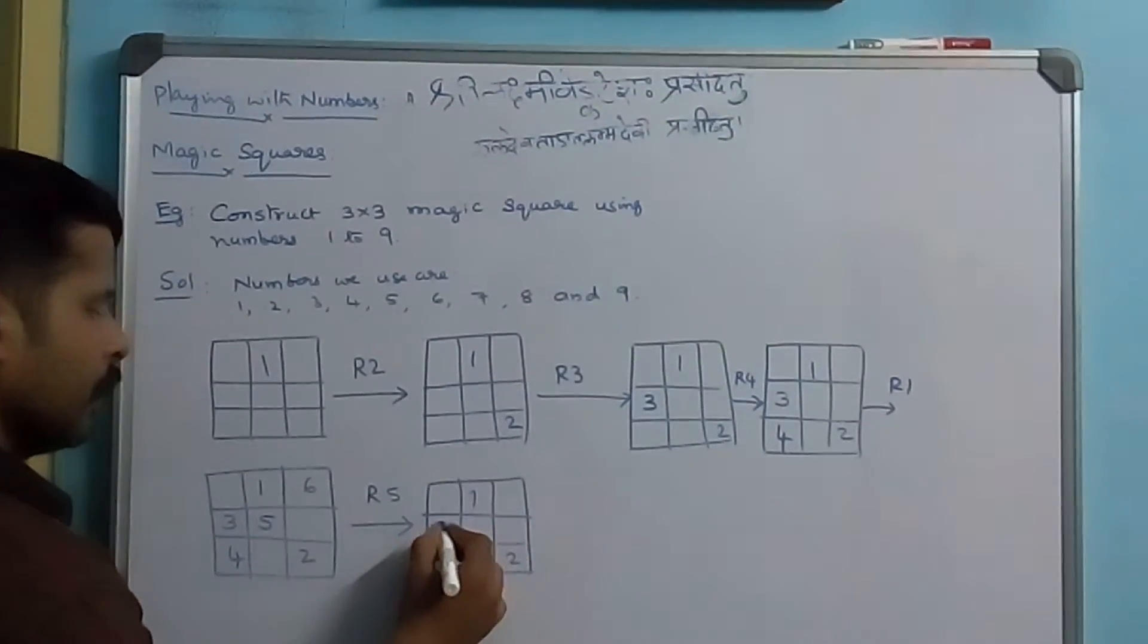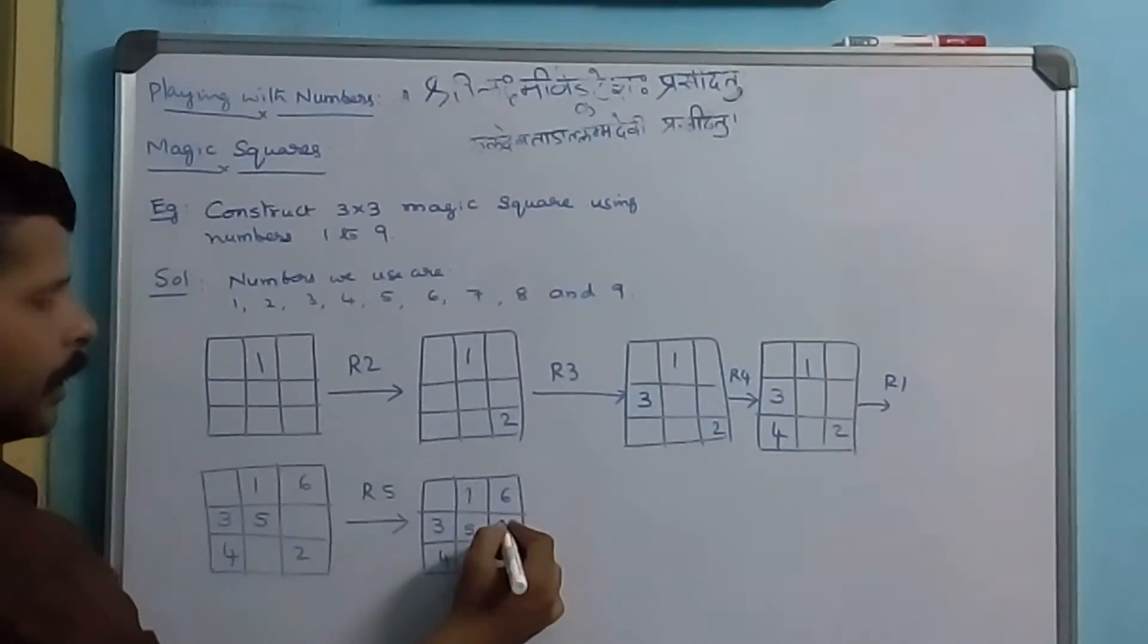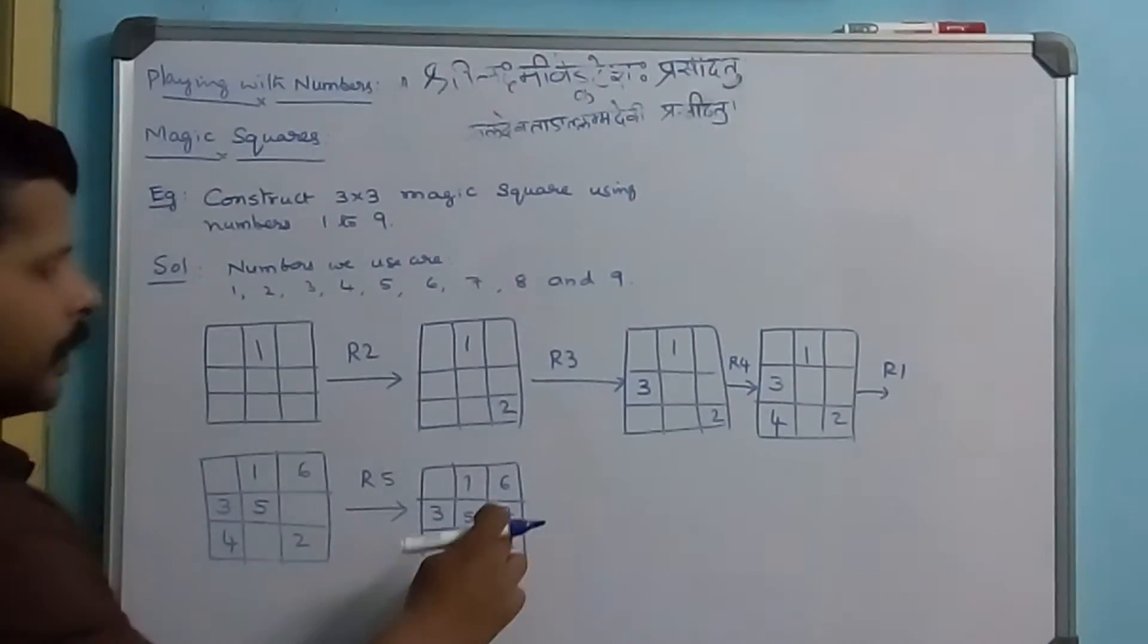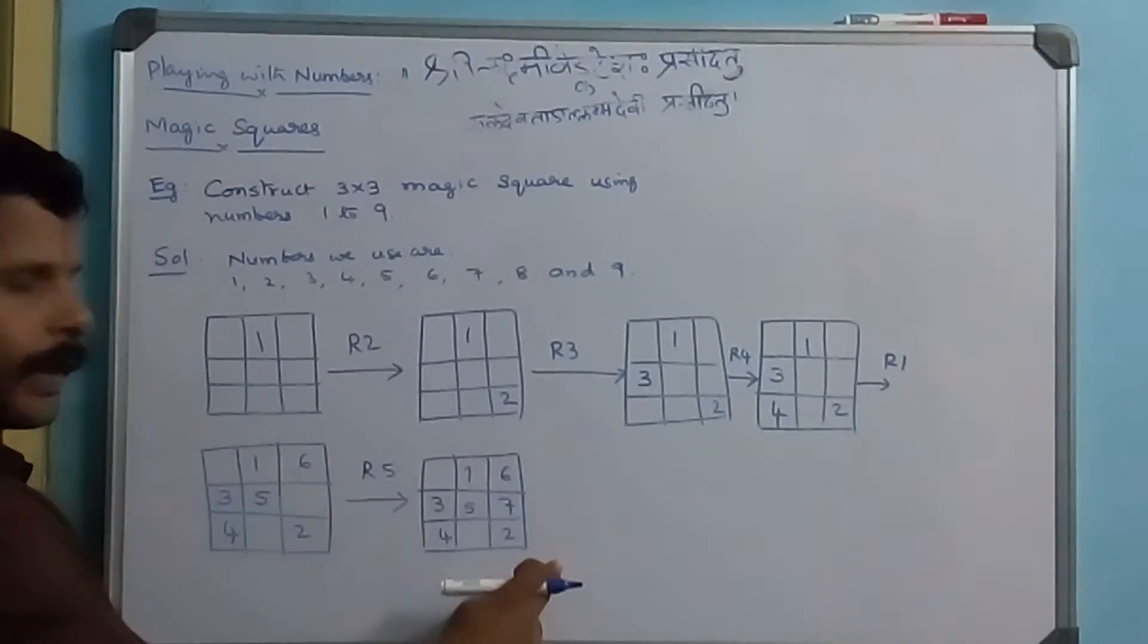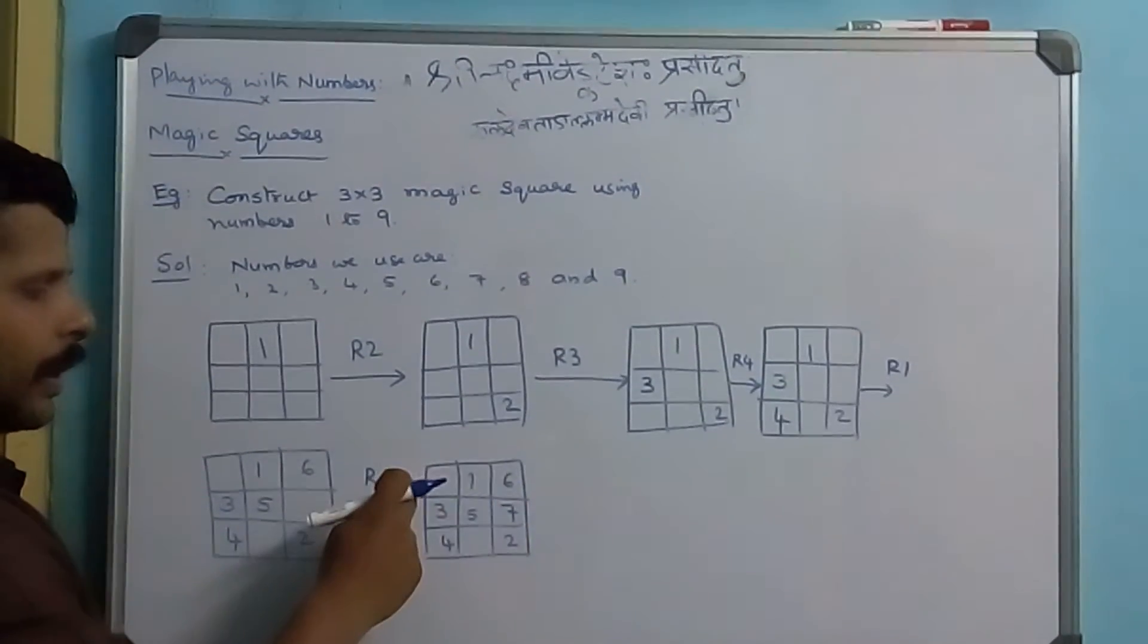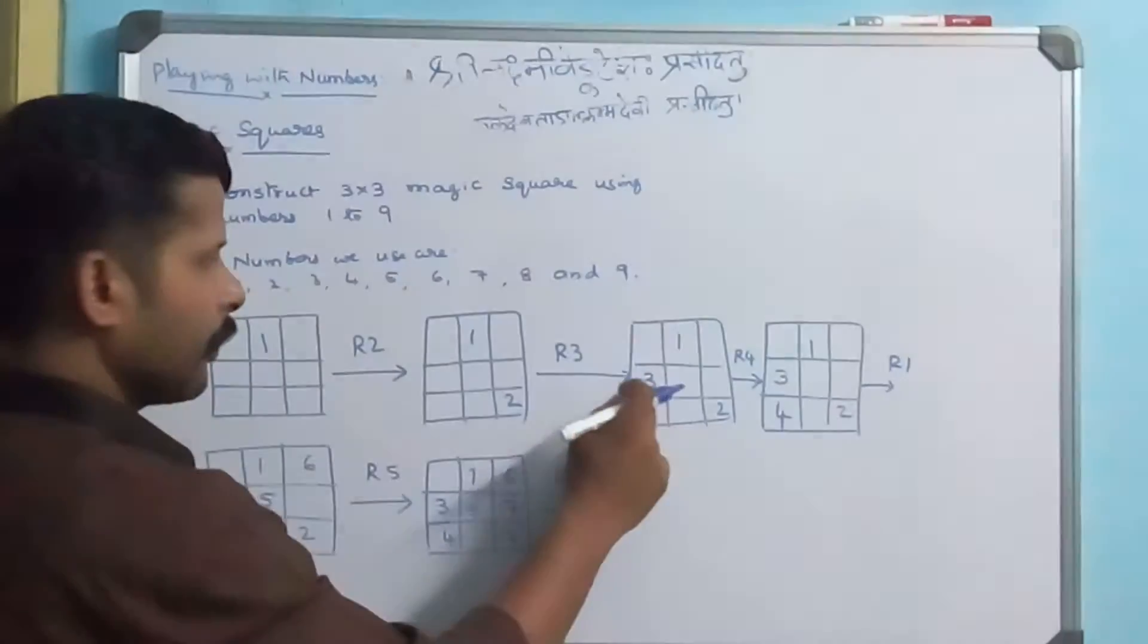Using rule 5, we fill the cell below the topmost diagonal element. Since we don't have a diagonal cell, next column, we will go to the other row and fill the leftmost cell using rule 3.